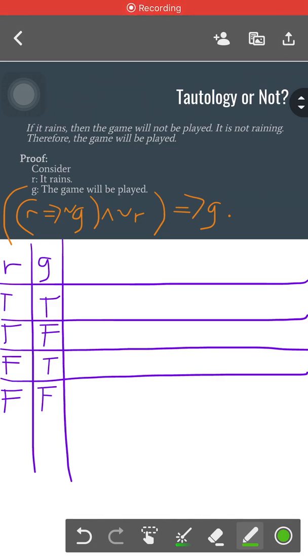We have another example here on how to have column headings in our truth table. If you're a bit confused on how we have this as a translation for this argument, just watch the video on how to translate propositions to propositional forms.